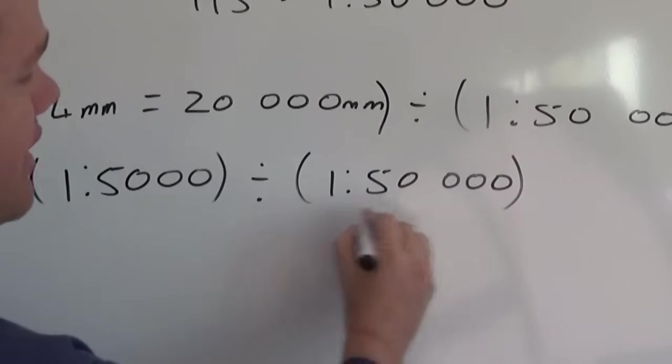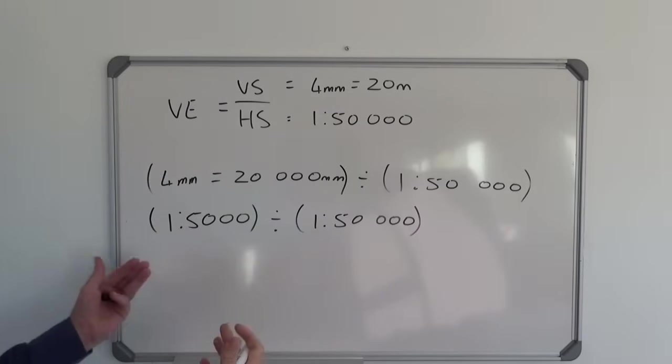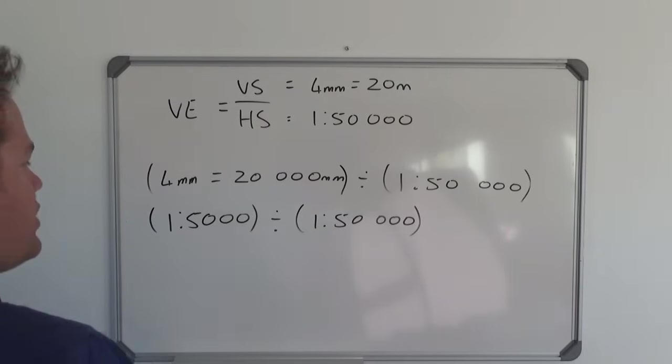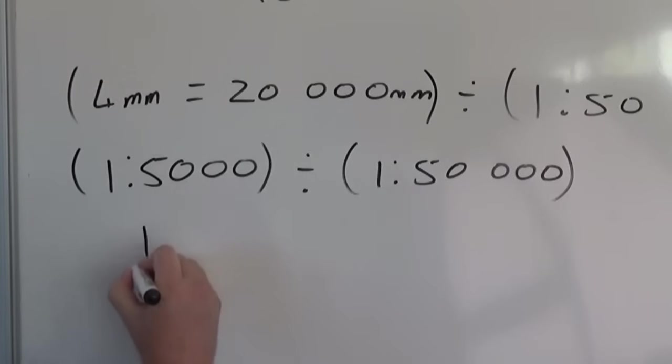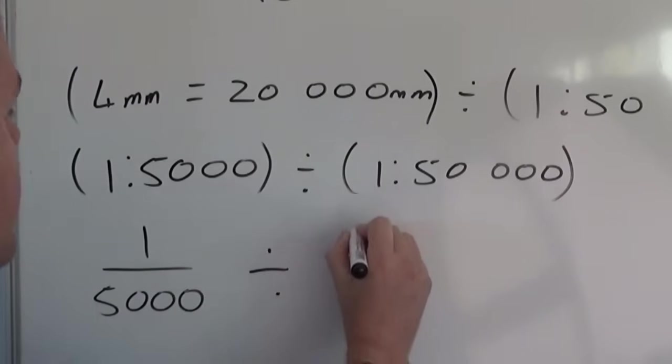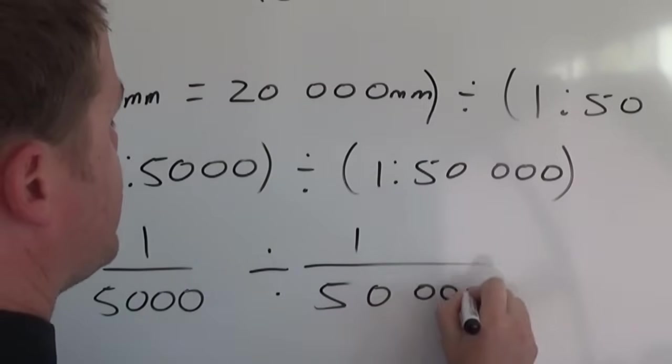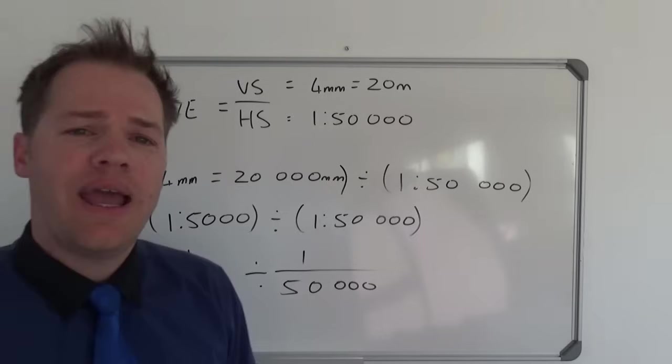So we don't actually need the brackets. But now we are going to write it as a fraction again. And so we have 1 divided by 5,000 divided by 1 over 50,000.